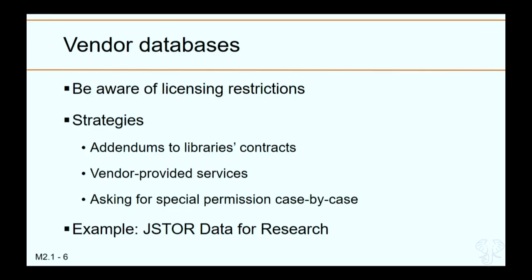Now we'll talk about common types of sources where users can start looking for textual data. One source that researchers often point to right away is vendor databases — the databases we purchase and provide to our researchers. But often there are licensing restrictions, even though the data is of higher quality. Agreements with vendors may prohibit us from using that data for text analysis rather than just reading, with prohibitions on storing and publishing. Strategies include: the library can negotiate addendums to licensing contracts to allow text analysis, some vendors are providing services for text mining their collections, and researchers can sometimes ask for special permissions to mine a specific portion of vendor-provided data.